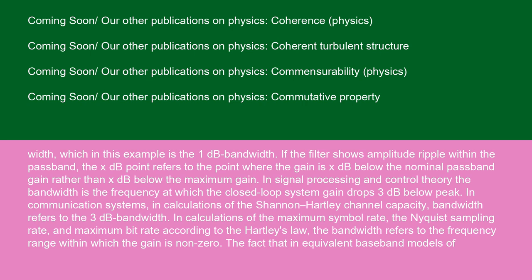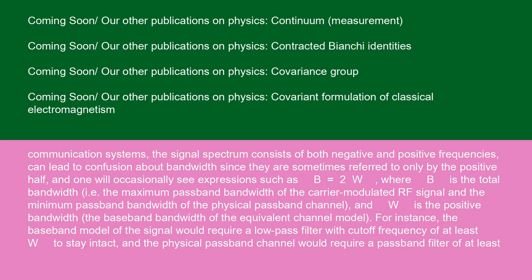The fact that in equivalent baseband models of communication systems, the signal spectrum consists of both negative and positive frequencies, can lead to confusion about bandwidth since they are sometimes referred to only by the positive half, and one will occasionally see expressions such as B equals 2W, where B is the total bandwidth, i.e. the maximum passband bandwidth of the carrier-modulated RF signal and the minimum passband bandwidth of the physical passband channel, and W is the positive bandwidth, the baseband bandwidth of the equivalent channel model. For instance, the baseband model of the signal would require a low-pass filter with cut-off frequency of at least W to stay intact, and the physical passband channel would require a passband filter of at least B to stay intact.